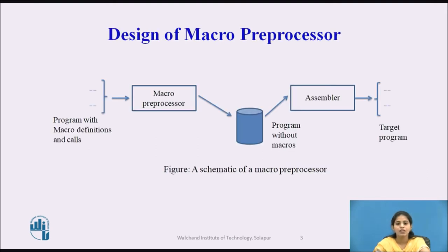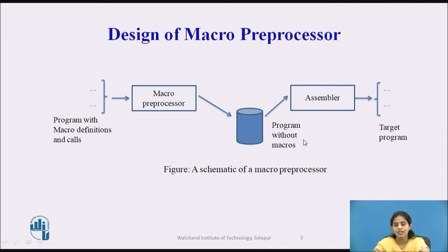Here is the schematic of the micro preprocessor. The input given to the micro preprocessor is the assembly program with macro definitions and calls. The micro preprocessor translates that program and generates a program without macro definitions and macro calls. This program is given as input to the assembler, which generates the target program.